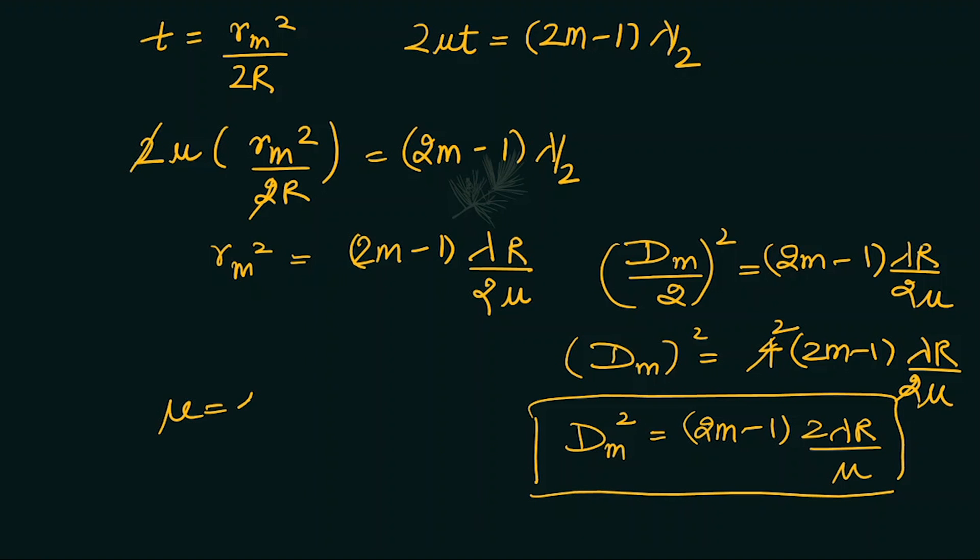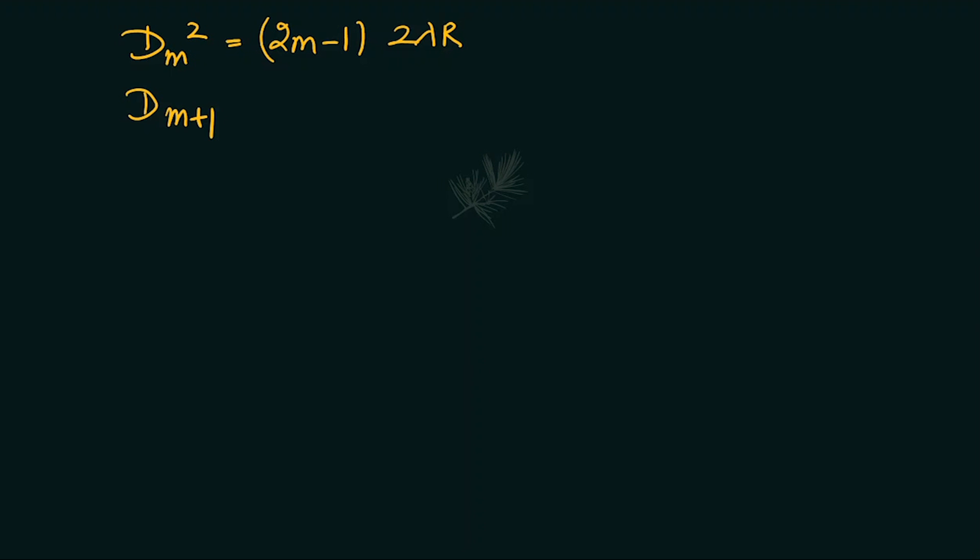If the diameter of (m+p)th ring is equal to 2(m+p-1)λR, let's take the difference: diameter squared of (m+p)th ring minus diameter squared of mth ring.